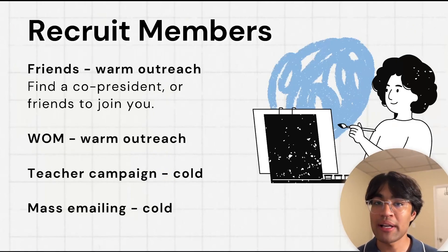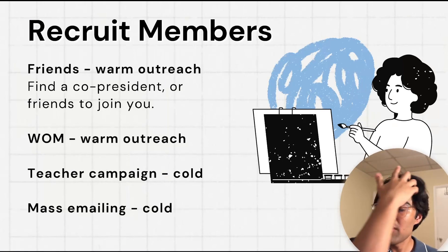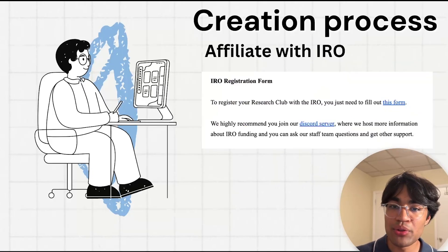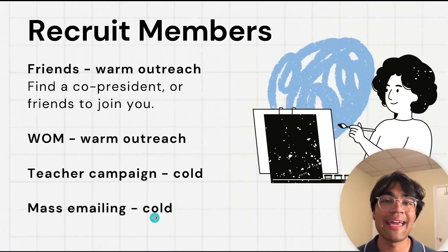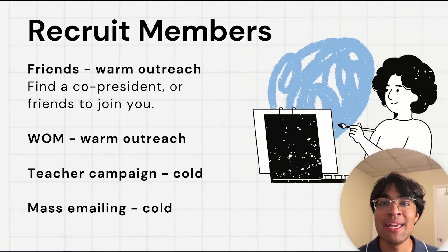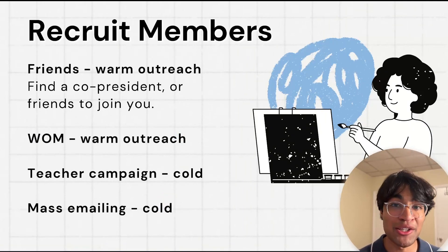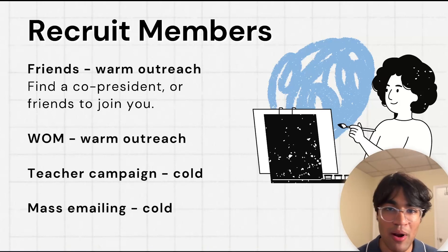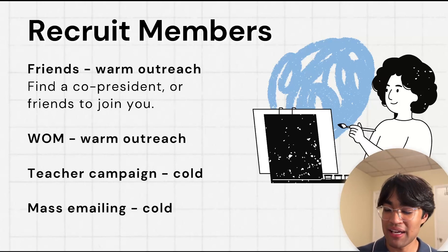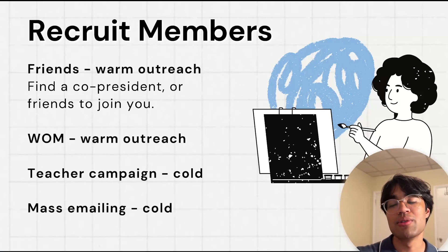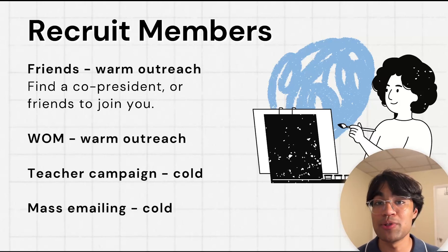Next, we're going to get into recruiting members. This is the first way you can start to scale your impact and truly see your club blossom. Our guide — the Google Doc linked in the description — goes in depth about this whole process. As someone who has grown social media accounts, with my first YouTube channel reaching 100,000 subscribers and growing this one as well, I have experience with recruiting people, outreach, and getting leads. Here are four techniques you can use to get members in your club and really scale your impact.